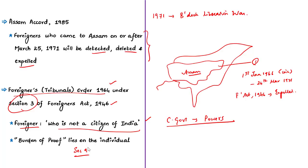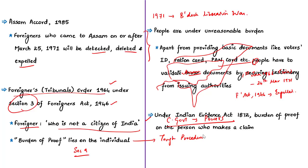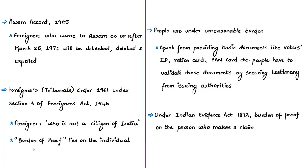The author tells us this procedure is not easy. Those going to the Foreigners Tribunal are under an unreasonable burden of proving their citizenship beyond doubt. Documents that define us as Indian citizens — like electoral IDs, voters list, land revenue receipts, PAN card, ration cards — are all relevant. But those appearing before Foreigners Tribunals also have to provide documents proving their ancestors were in India prior to 25th March 1971, which is an extra burden on those persons.